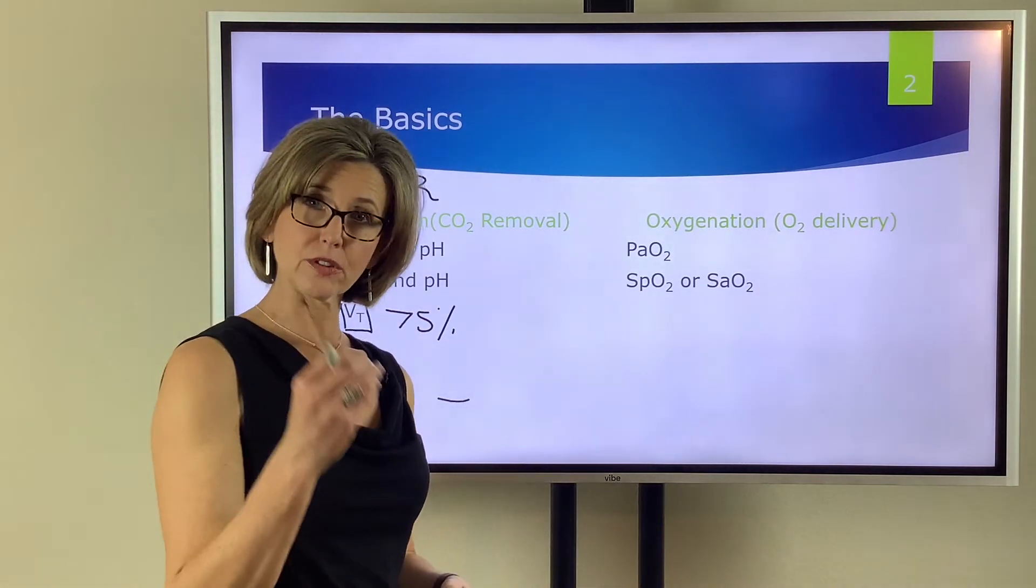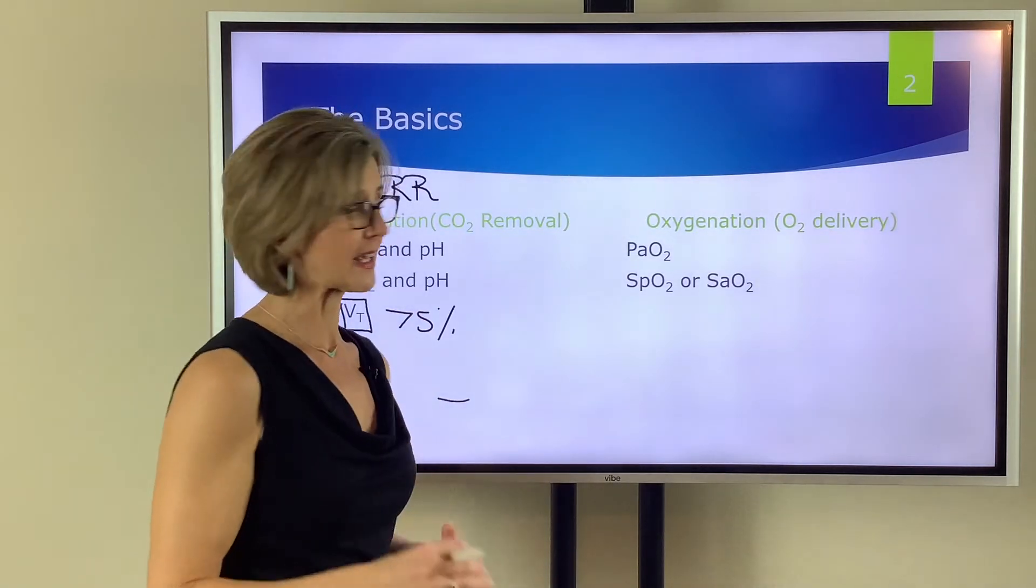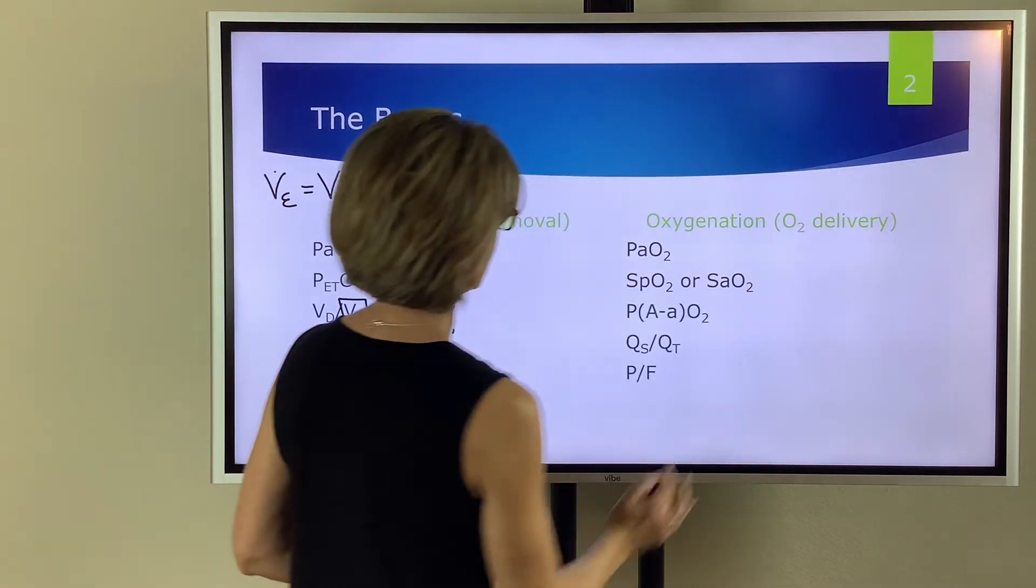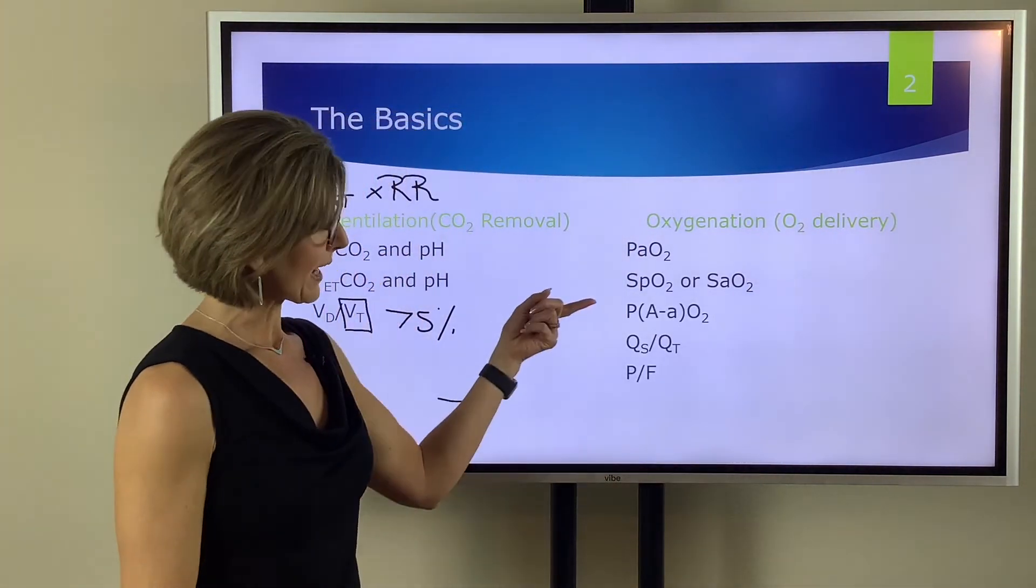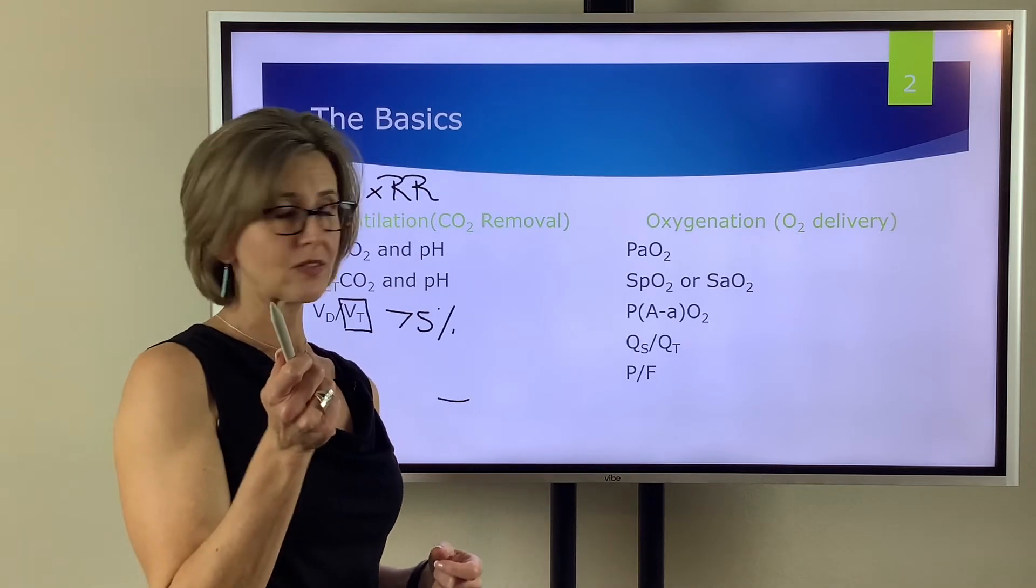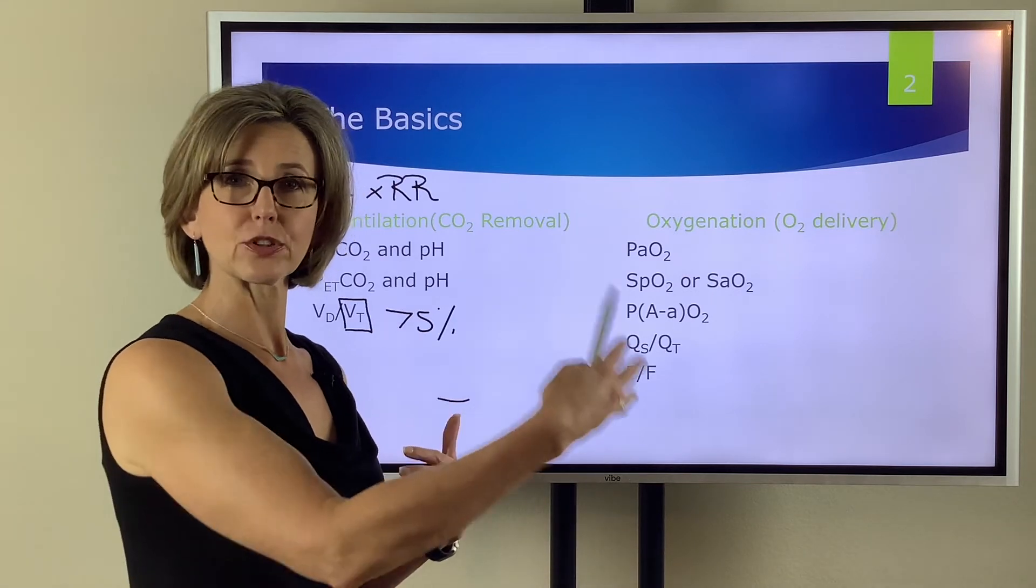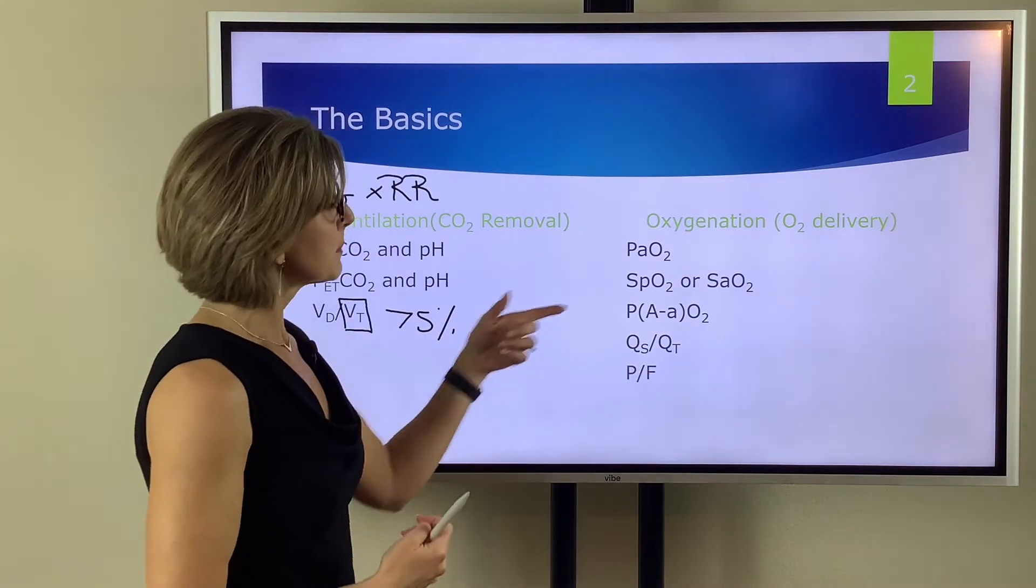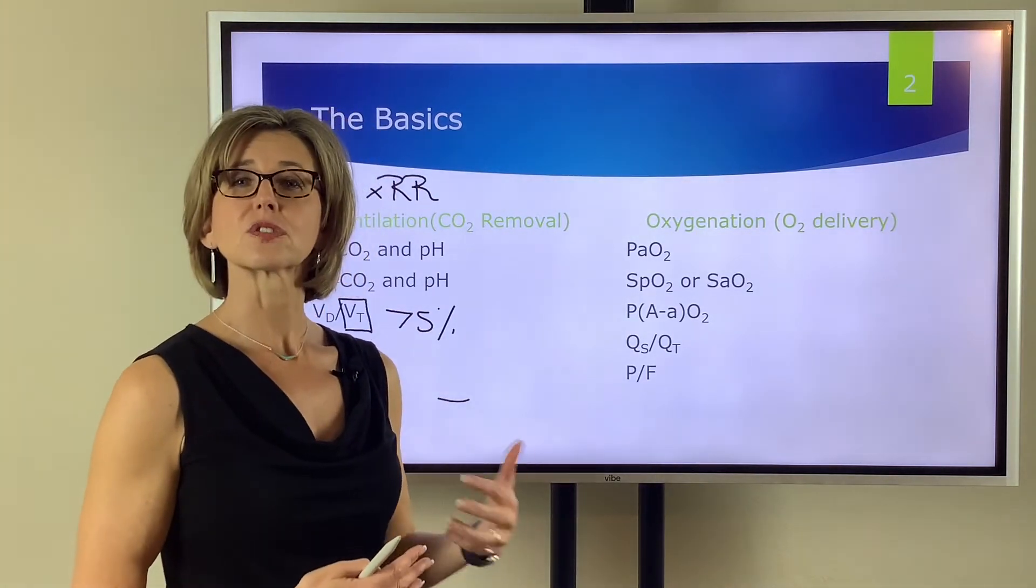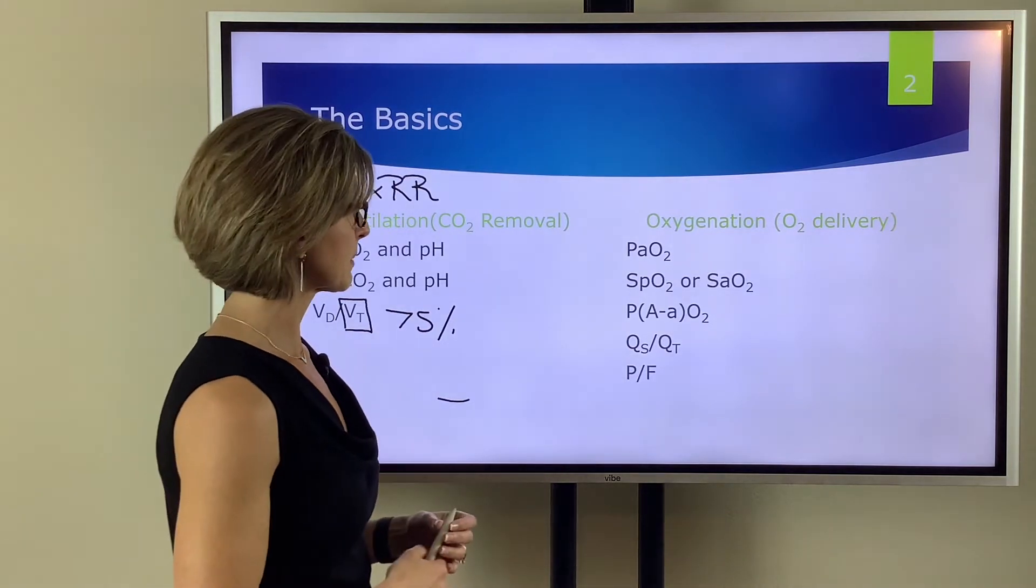But there are ways to look at how efficiently oxygenation is happening at the AC membrane and those ways are going to be your A to A difference. So if you haven't had a chance to look at the video I talk about A to A difference and what it means when that difference is increasing versus decreasing. But as that A to A difference increases that means the lungs are less efficient at the diffusion of O2 across the AC membrane.